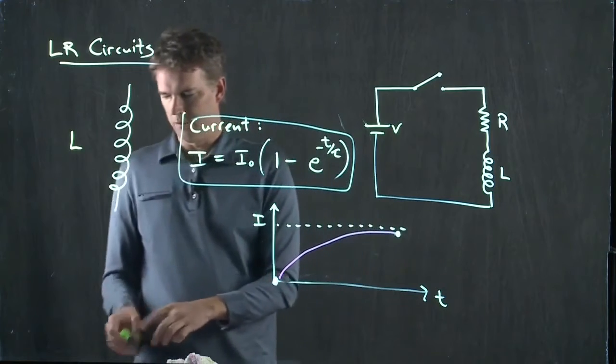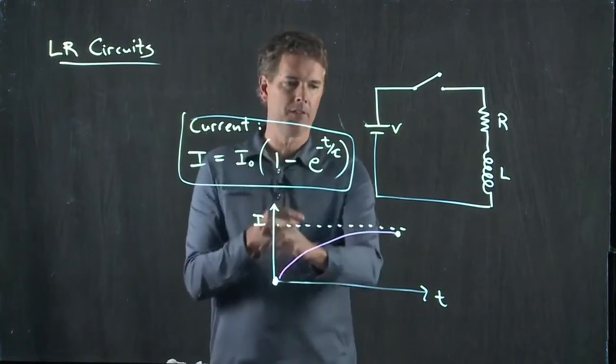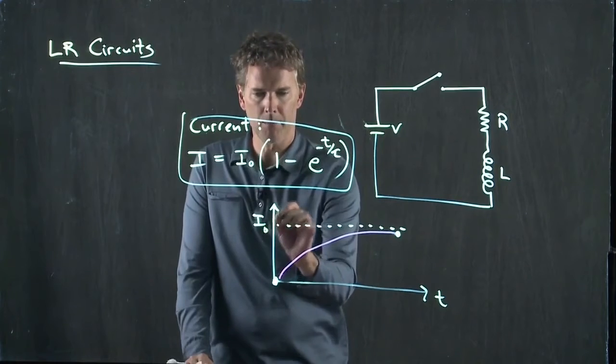Okay? This is what the current looks like in this system. What are the different values in this function? I naught is just the maximum current. That's where you end up, right there.